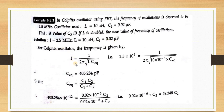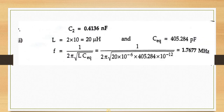Using F = 1/(2π√(L·C_eq)), substitute L and F to find C_eq = 405.284 pF. Then from C_eq = C1·C2/(C1+C2), knowing C1 and C_eq, calculate C2 = 0.416 nF.